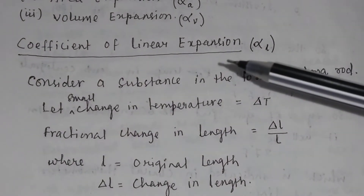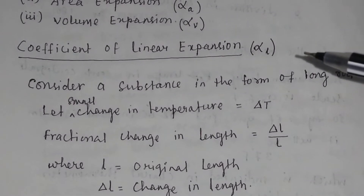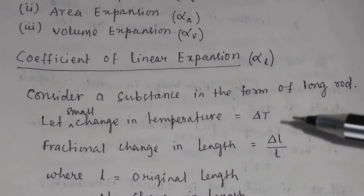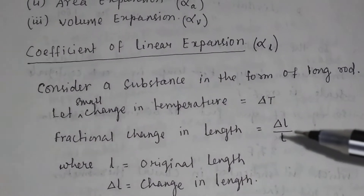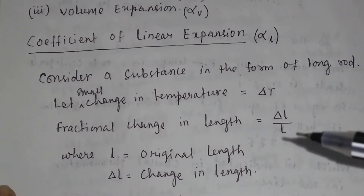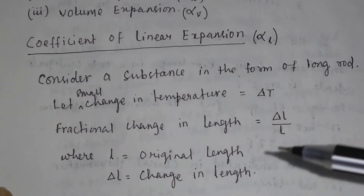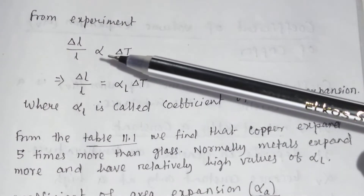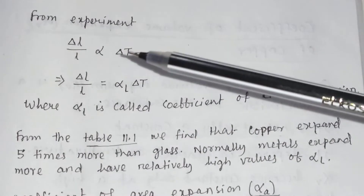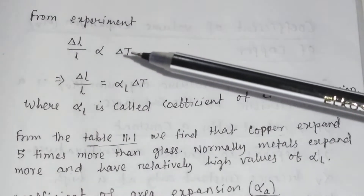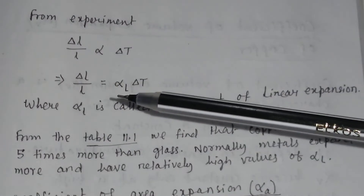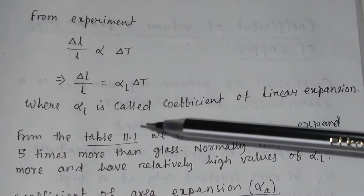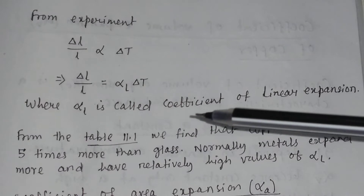What is coefficient of linear expansion, which is denoted by alpha L? Consider a substance in the form of a long rod. Suppose the change in temperature is delta T. The fractional change in length is delta L divided by L, where L is the original length and delta L is the change in length. From experiment it is found that delta L divided by L is proportional to delta T. So delta L divided by L is equal to alpha L into delta T, where alpha L is a constant called the coefficient of linear expansion.